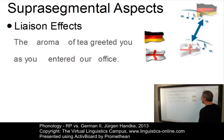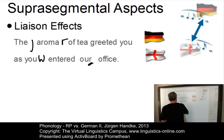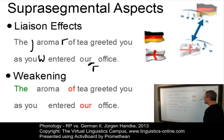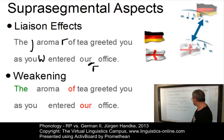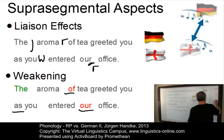In English we have liaison effects which are optional — for example, 'the aroma of tea greeted you as you entered our office' where the linking R would be realized. The second problem concerns the use of so-called weak forms. Germans generally do not make them weak enough, so 'the aroma of tea greeted you as you entered our office' would be a typical German mistake, instead of the correct reduced version. Weak forms are generally not weak enough.